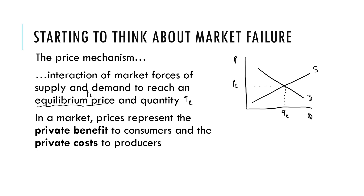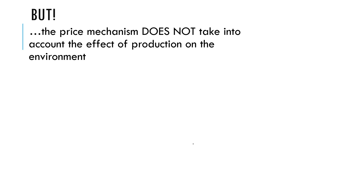What I'm saying here is that in a market, prices represent the private benefit that consumers get. This is represented by their demand, and it also represents the private costs to producers. So the price is how much it costs producers to produce, and this relates to supply. Where private benefit and private cost interact, that's where we get the equilibrium price. But you may have noticed a word: private benefit.